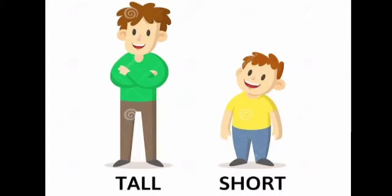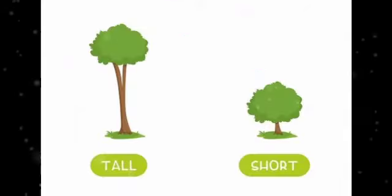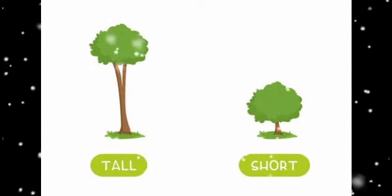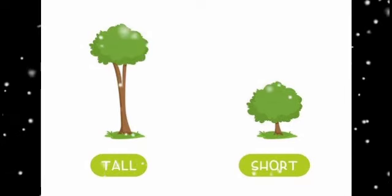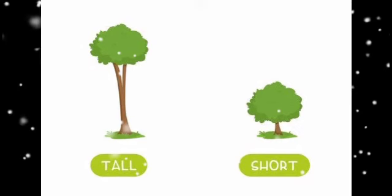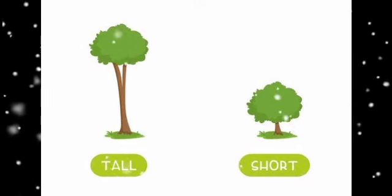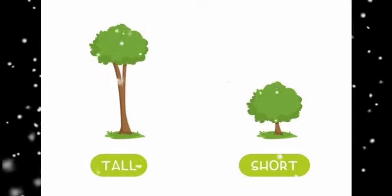Now concept number two: tall and short. T-A-L-L, tall. S-H-O-R-T, short. What do you observe in this picture? Two persons are there — one is tall and the second one is short. Now observe the second picture: one is a tall tree and the second one is short. The first picture is very tall and the second one is very short.